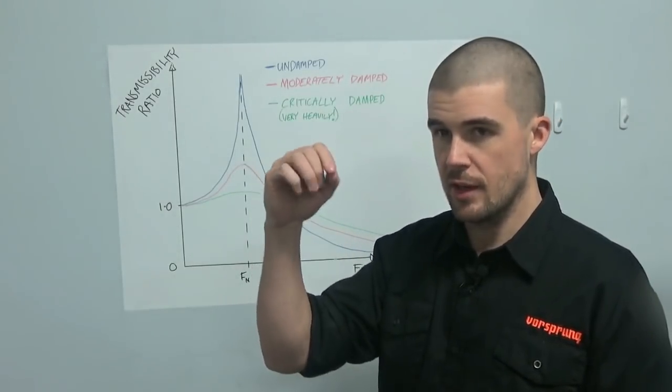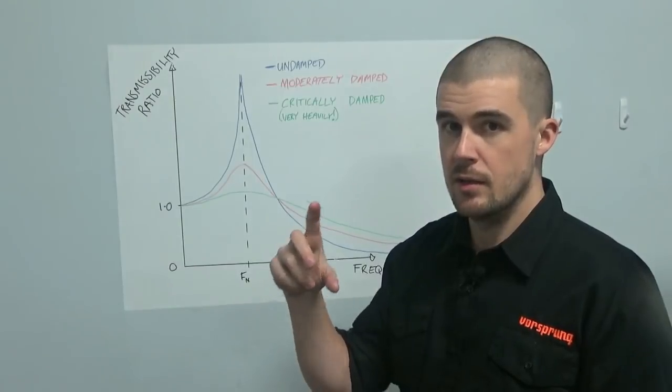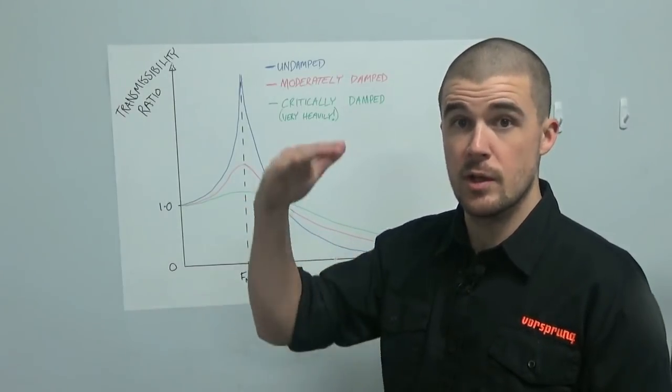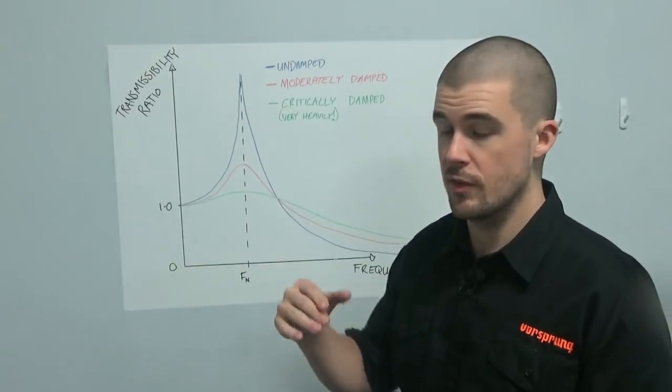So the elevation that the ground shifts by might be, let's say, 2 inches, but your suspension is moving 4 because you're essentially resonating.